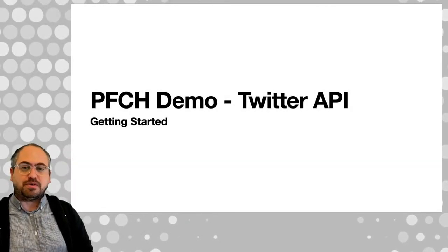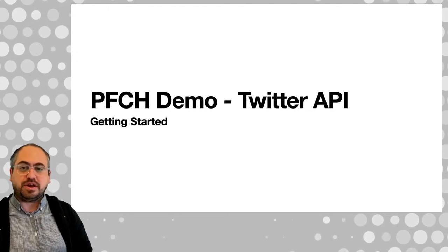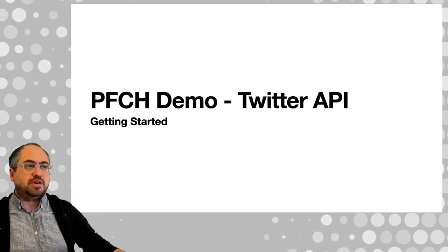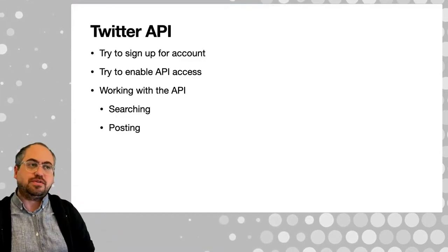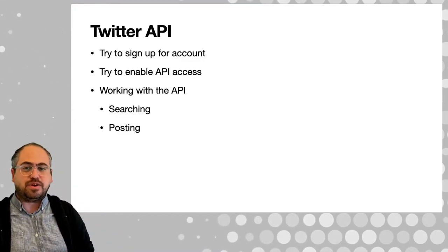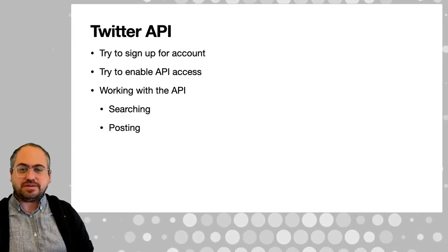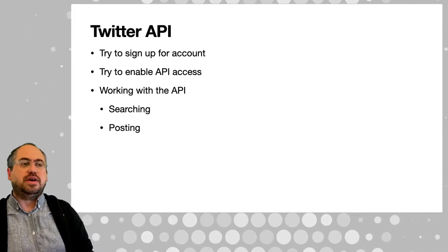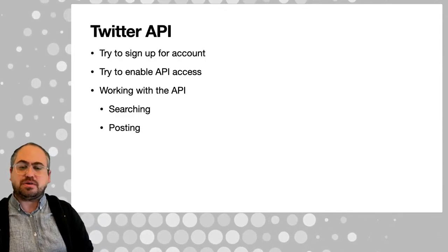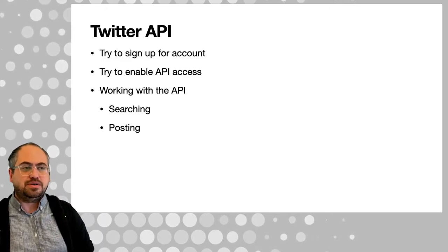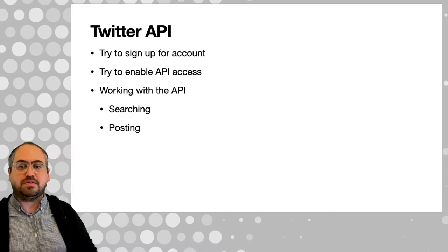Hi, welcome to this Programming for Cultural Heritage demo video. Today we're going to be looking at the Twitter API. There are a number of beginning steps we're going to get done in this video. First is signing up for an account and trying to get API access - a key and all that stuff. Then we're going to start interacting with the API using a Python module to do things like searching for posts, creating posts, and posting stuff to Twitter.